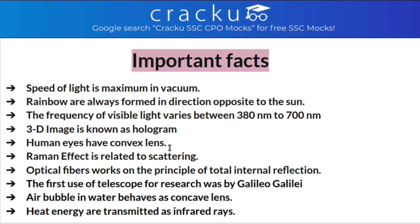There are two types of lenses — convex and concave. Concave lenses have a dip on the inner side and convex lenses are bulged from the outer side. Human eyes have convex lenses. Raman effect is related to scattering, and for this C.V. Raman received the Nobel Prize in Physics. Optical fiber works on the principle of total internal reflection.